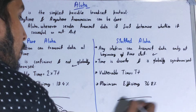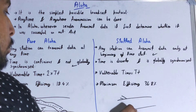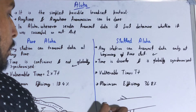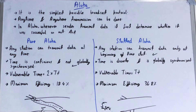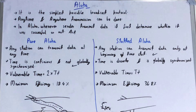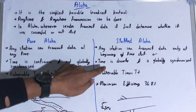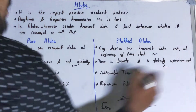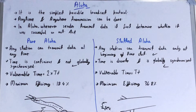In slotted ALOHA, there are still multiple stations, but a time slot is defined — for example, five microseconds. Whenever that time slot starts, stations are allowed to send data; but once that particular time slot has already started, a station cannot begin sending. In slotted ALOHA, time is discrete and globally synchronized so that stations align with the defined time slots.